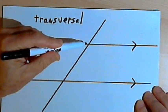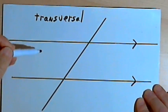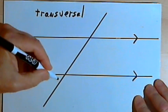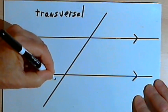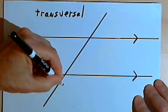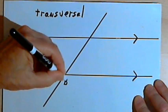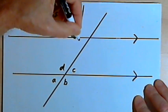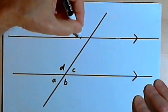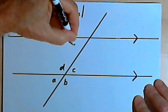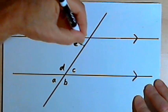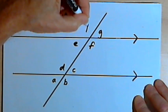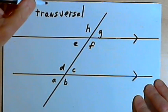Each place where the transversal intersects a parallel line it forms four angles. Let's label these angles. On the lower line I'll label them A, B, C, and D. And where it intersects the upper line, I'll label them E, F, G, and H.